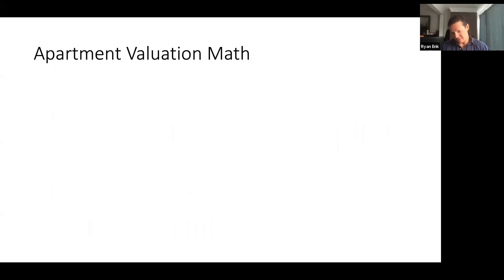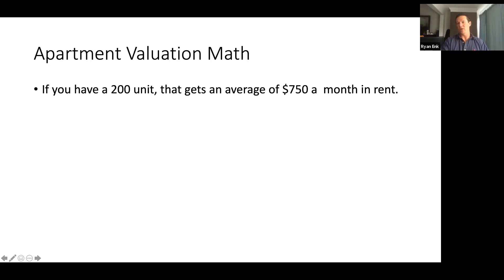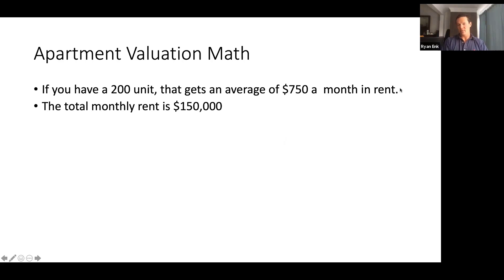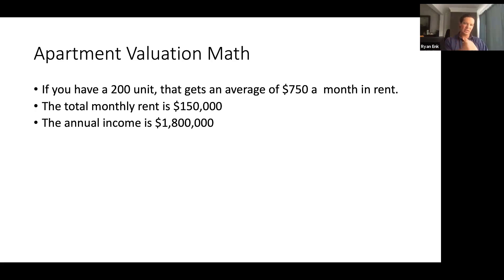Let's talk about some math — it's going to be helpful to write this down, maybe screenshot it, and get your calculator out. Take an example: say you have 200 apartment units that gets you an average of $750 a month in rent. The total monthly rent is $150,000, because that's $750 times 200. Taken annually, that's $1.8 million a year.